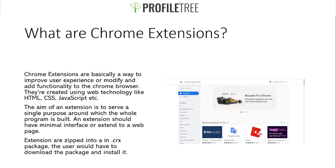The aim of an extension is to basically serve a single purpose which the whole program is built around. An extension should have a minimal interface or extend to a web page. Extensions are zipped into a CRX package, which means the user simply clicks to download and install it.